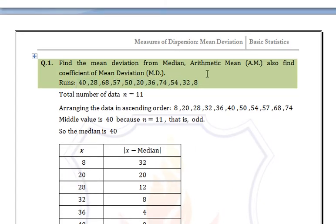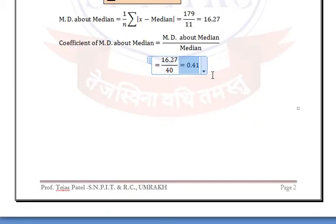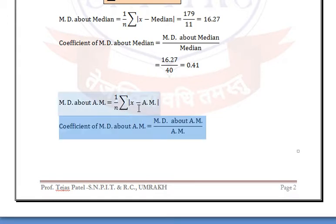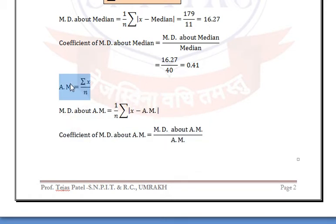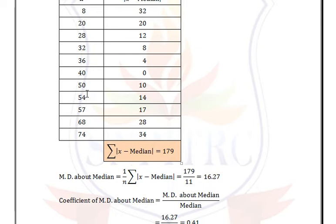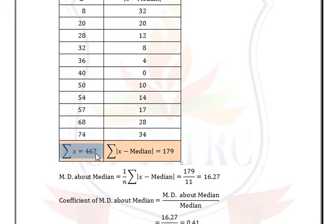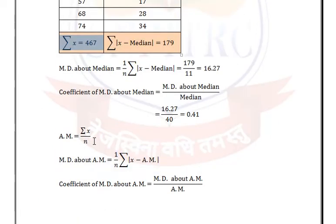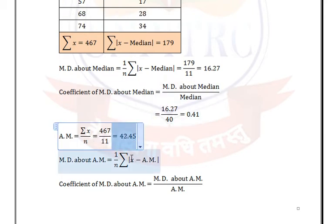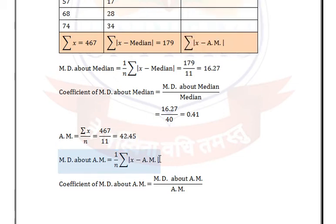Now we find mean deviation and coefficient of mean deviation from the arithmetic mean. The formula for arithmetic mean with only observations is summation x divided by n. Here summation x is the addition of all variables, and small n = 11, so arithmetic mean = 467 / 11 = 42.45. Now we calculate |x - arithmetic mean|.